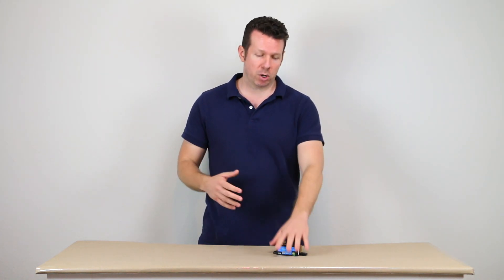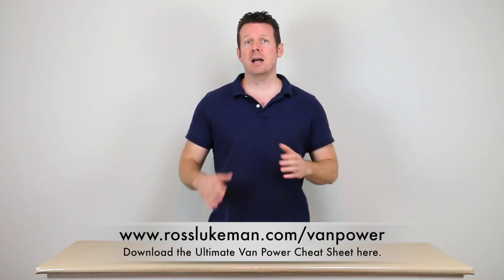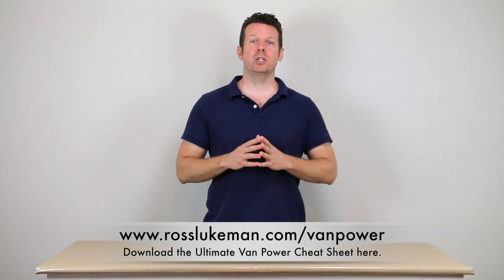All right, so that's all I've got for you today. If you would, leave me a comment down below and let me know which battery monitor you think is right for your situation, either the smart shunt or the BMV 712. And if you want additional help and a jump start on your van's electrical system, go to rossluckman.com/vanpower to download the ultimate van power cheat sheet and get started with your electrical system today. So thanks for watching and I'll see you again soon.